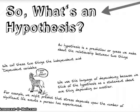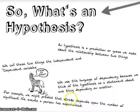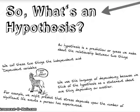For example, we could predict — make a hypothesis — that stress depends upon the number of significant life events a person has experienced. So your level of stress, measured in some way, depends upon the number of significant life events. By significant life events, I mean things like divorce, death of a close relative, being made redundant — that kind of stuff.